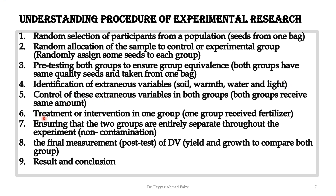Step five is the treatment or intervention in one group. Just as we gave fertilizer to one group of seeds and deprived the other, we introduce our independent variable — which is basically the treatment or intervention — to the experimental group. Step six is ensuring that the two groups are entirely separate throughout the experiment.